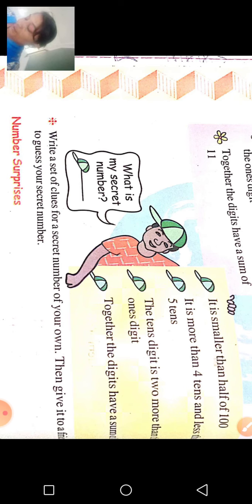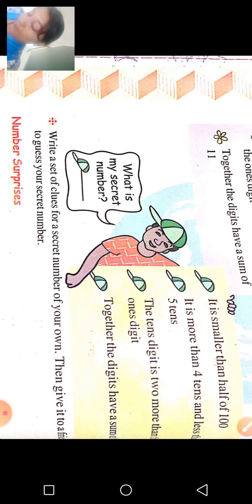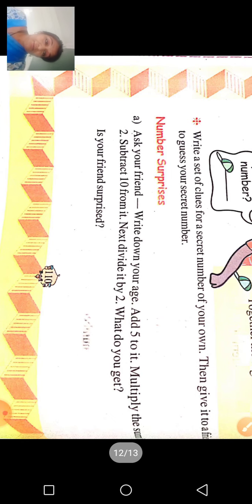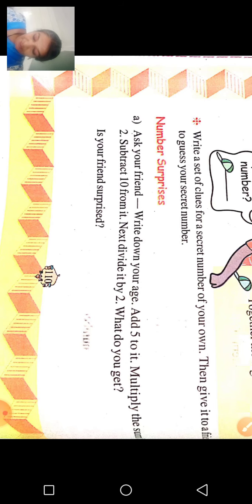यह सब questions आप अपने friends को पूछ सकते हैं. If more than four tenths are there, then one digit — together the digits have same sum of six. Write the set of clues for a secret number of your own, then give it to a friend to guess your secret number. फिर है Number Surprises — ask your friend to write down their age, add five to it, multiply by two. आपको यहाँ अपना age क्या है वो पता करना है, फिर add करना है, multiply करना है, subscribe करना है 10 से, और answer क्या है — what do you get?